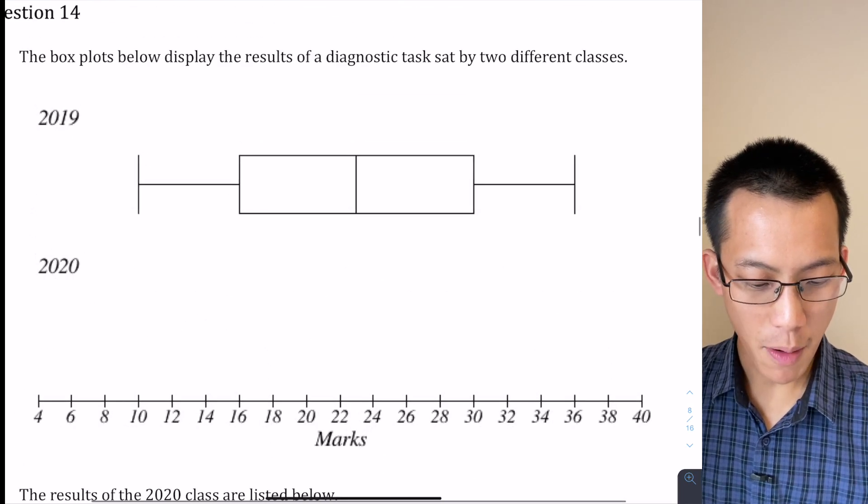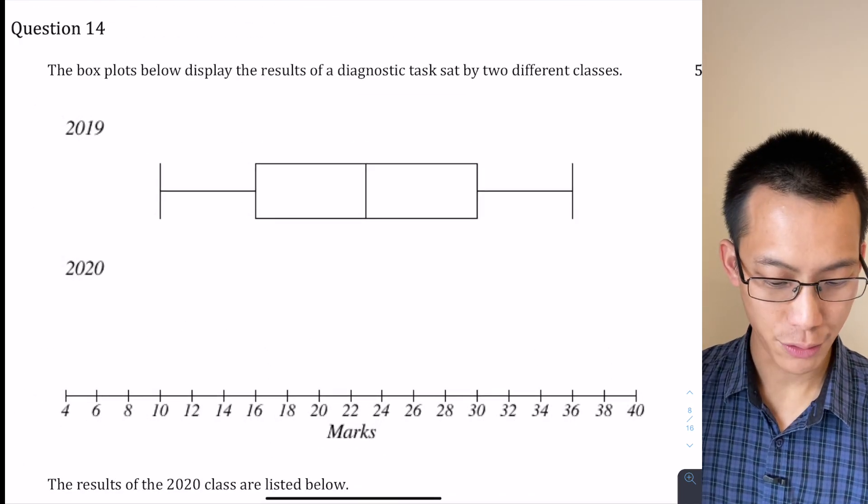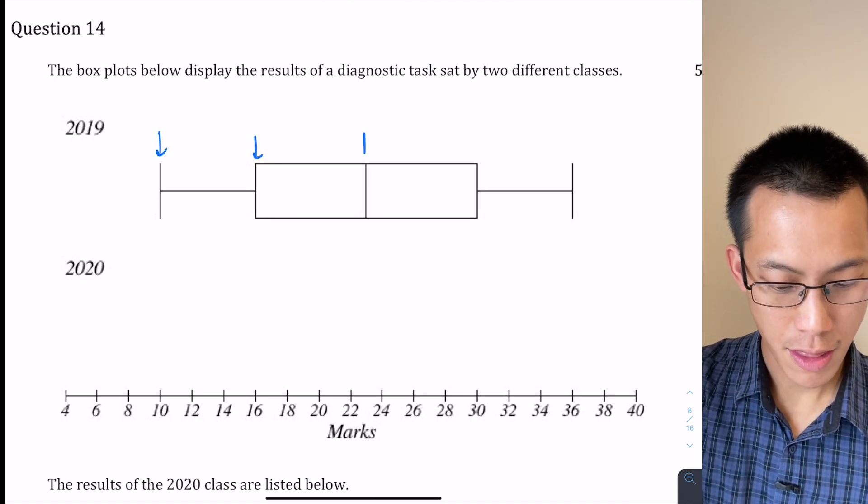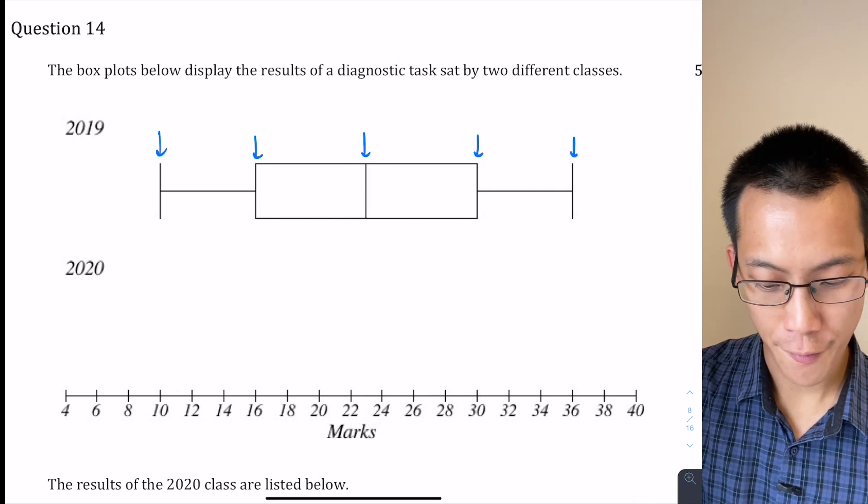Now you need to remember, what does a box plot actually tell you? Well, there's five important spots on a box plot. One, two, three, four, five.